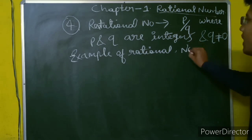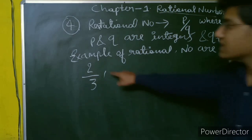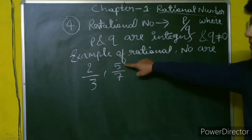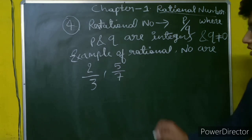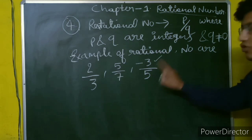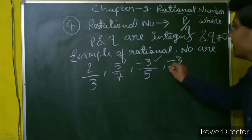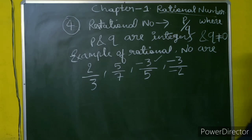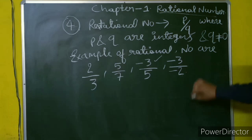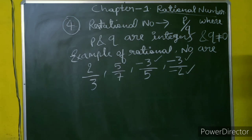Examples of rational numbers: 2 upon 3 — here 2 is an integer and 3 is also an integer. 5 upon 7 — 5 is an integer and 7 is also an integer. Minus 3 upon 5 — minus 3 is a negative integer and 5 is also an integer, so minus 3 upon 5 is a rational number. Minus 3 upon 2 is also a rational number.